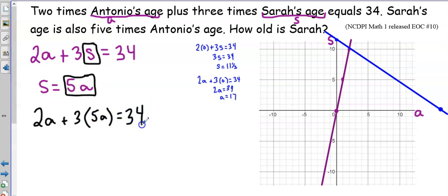And now I just need to solve my equation. So I have 2A plus multiply here to get 15A equals 34. When I add, I have 17A equals 34. When I divide both sides by 17, I have A equals 2, which does look like what I had on my graph.